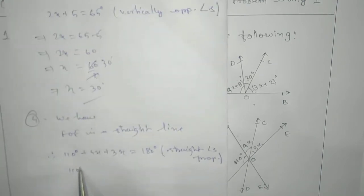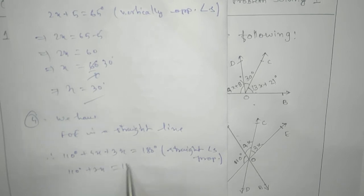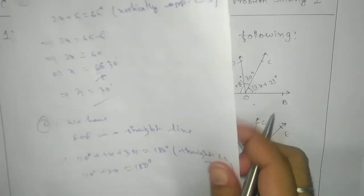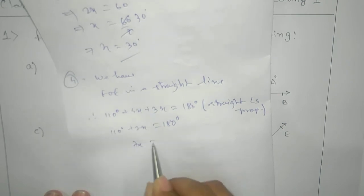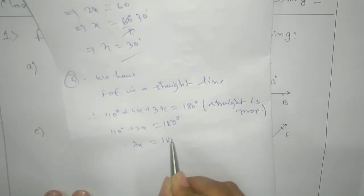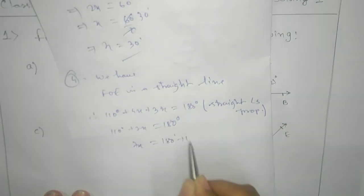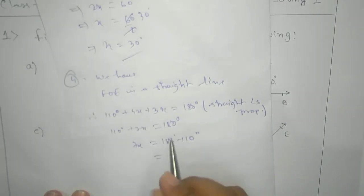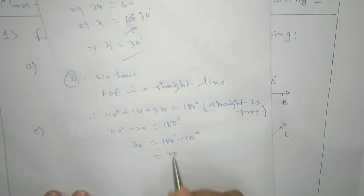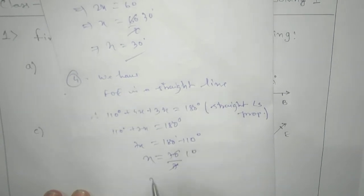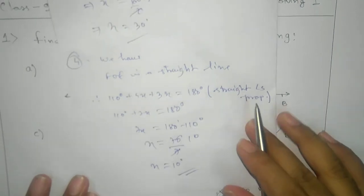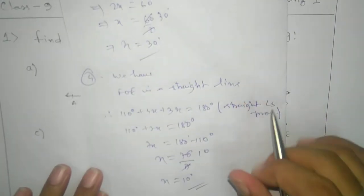Now add it up. We get 7X plus 110 equals 180. So 7X equals 180 minus 110, giving 70 by 7, which is 10. Therefore X equals 10 degrees. This is your answer.